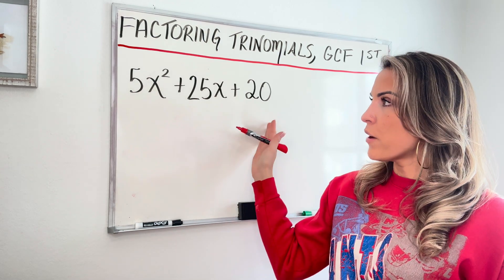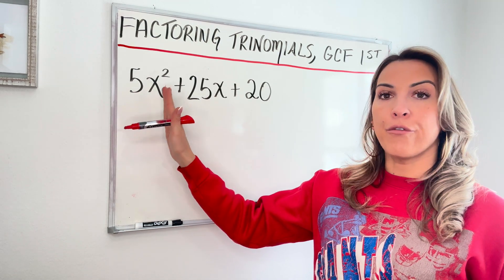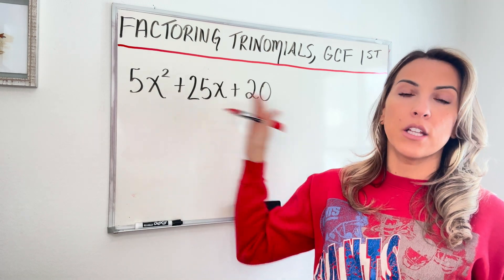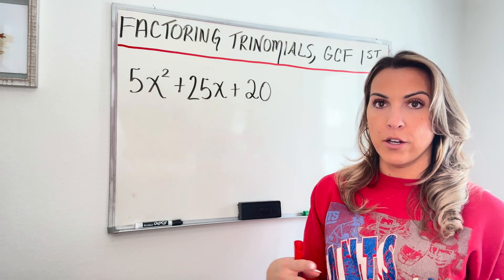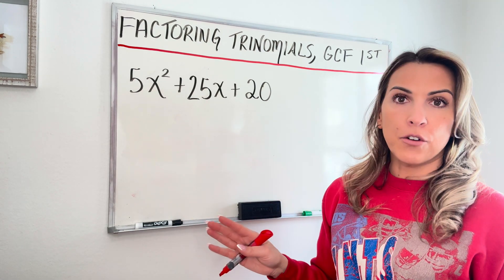Alright, so I've got a trinomial. A is not equal to one. The first thing I always do is see, is there a GCF that I can factor out when my directions are to factor? So I always check for a GCF first.